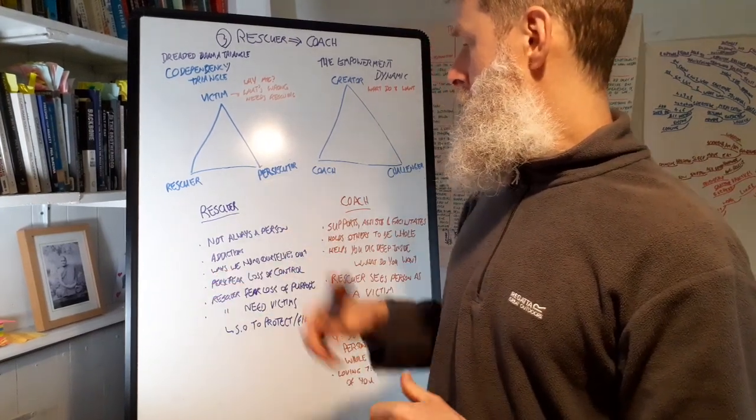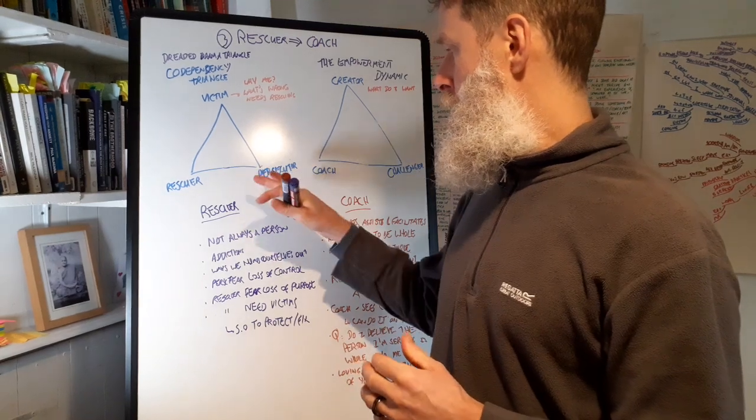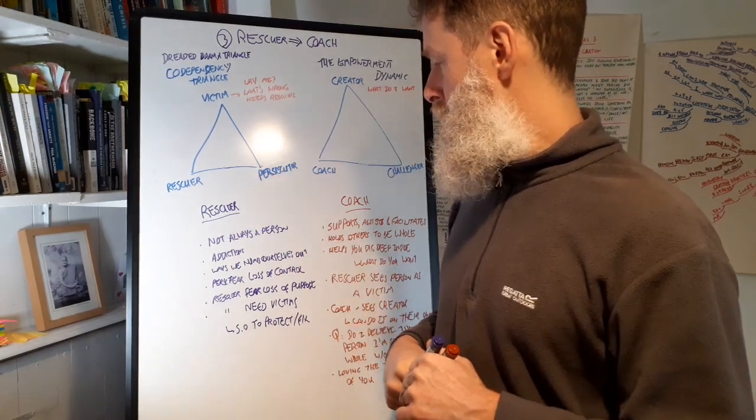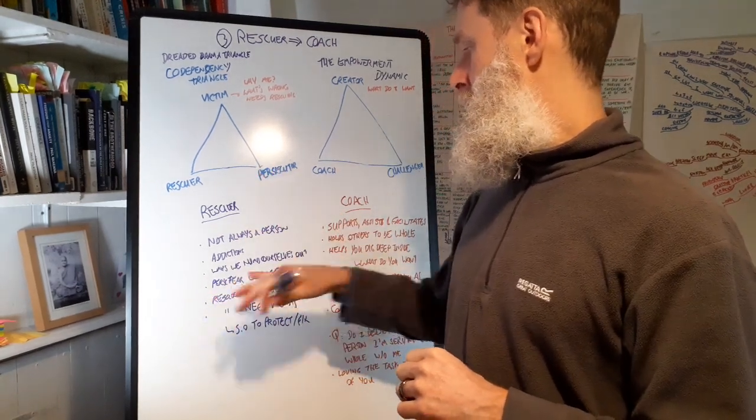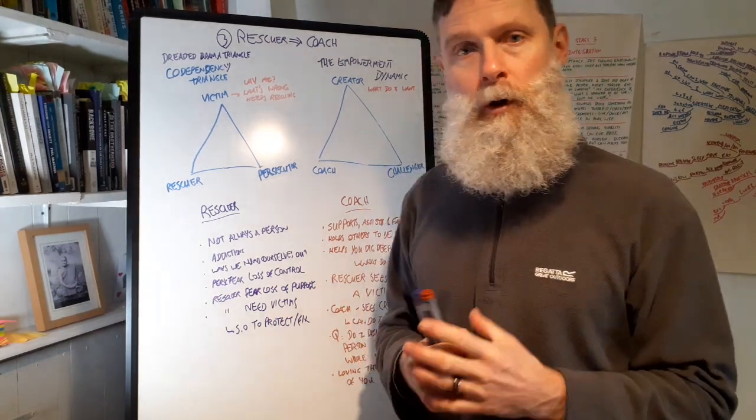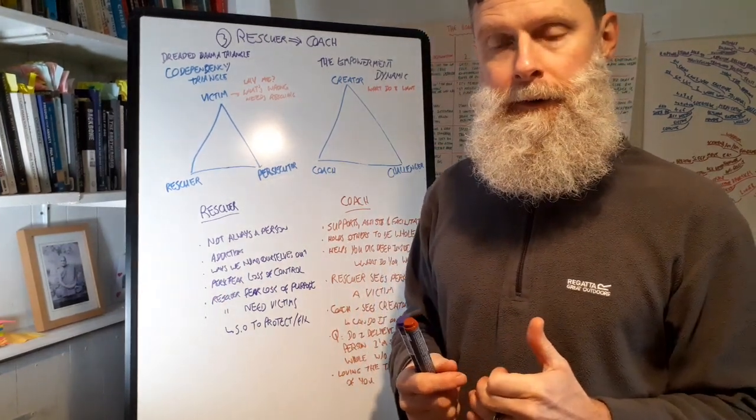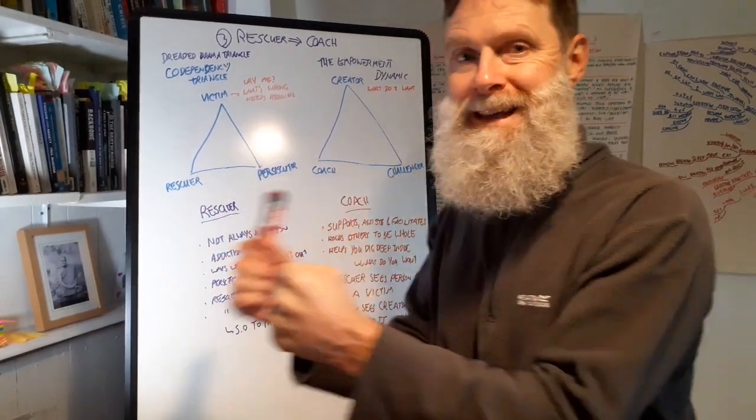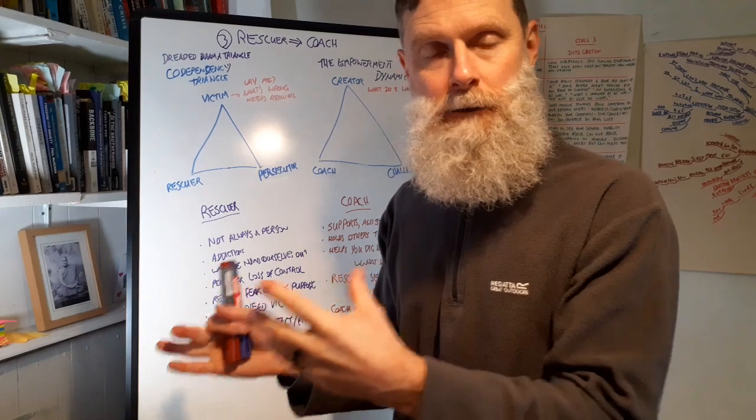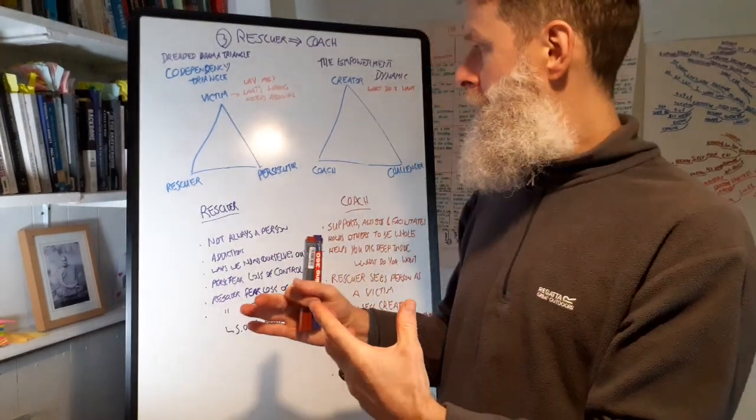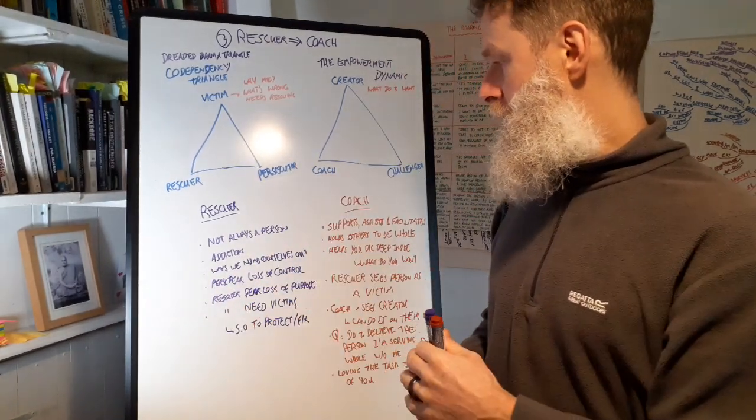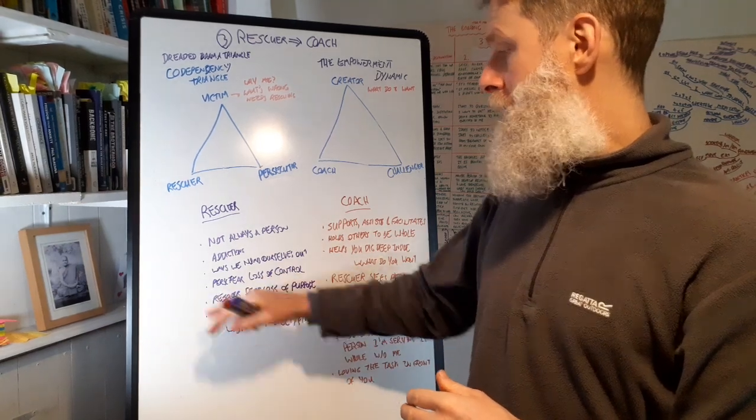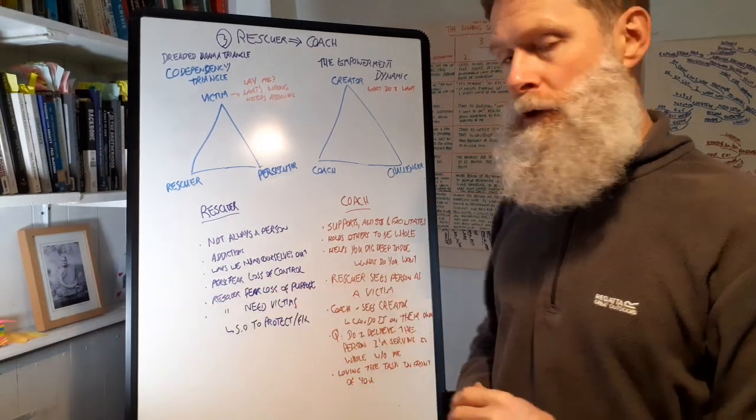The persecutor, I mentioned the time before, and I'll link that into the description. The persecutor fears a loss of control. I've got to control everything. Whereas the rescuer fears the loss of purpose.